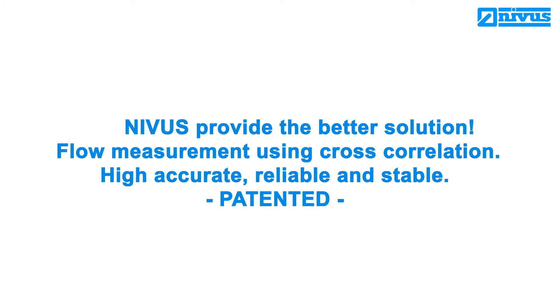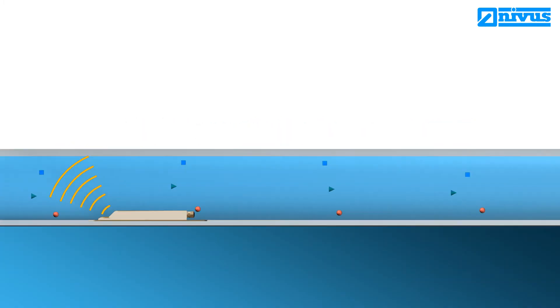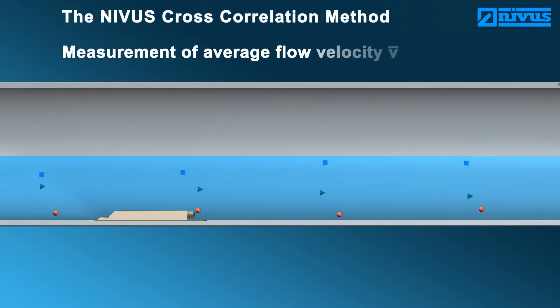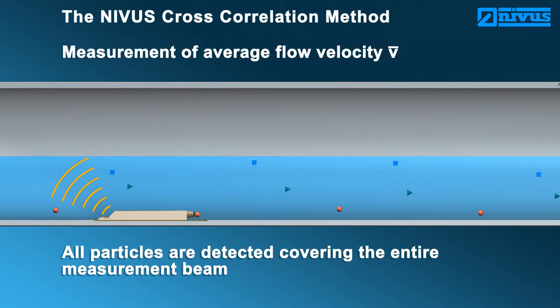Nivus provides the better solution. Flow measurement using cross-correlation: highly accurate, reliable, and stable. The Nivus cross-correlation method is not a spot velocity measurement. Here, all particles are detected at the same time covering the entire measurement beam.